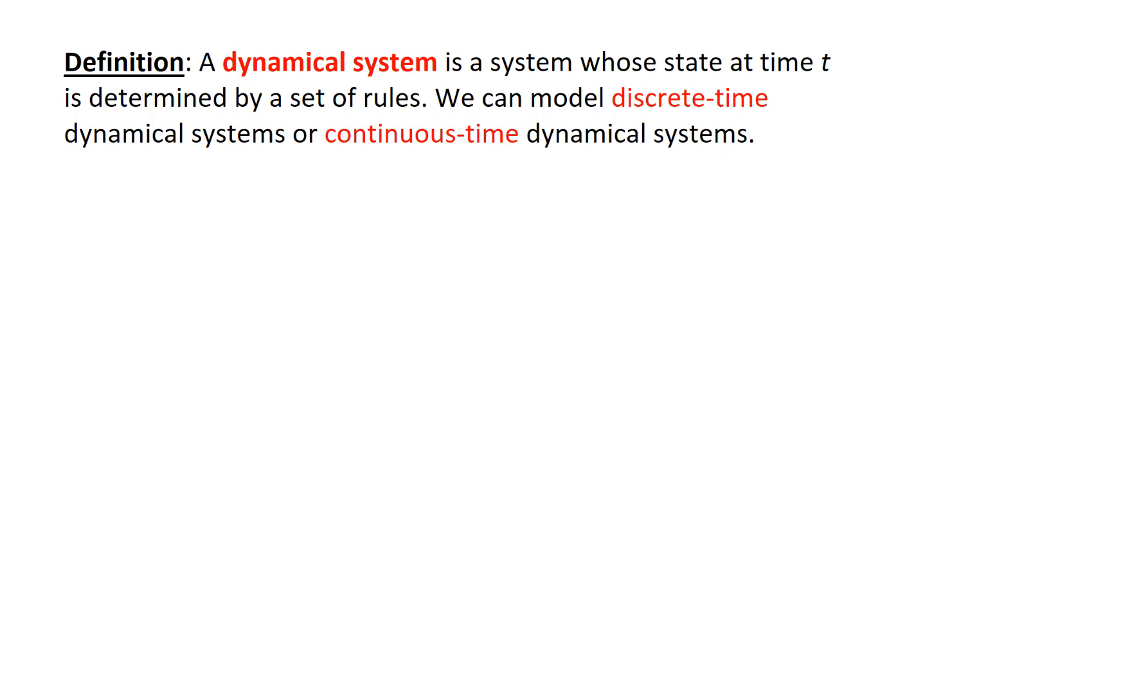I'd like to talk about discrete-time versus continuous-time dynamical models. First of all, for discrete-time, these are models where time is measured with a discrete variable. So models with time measured discretely.